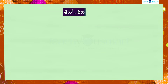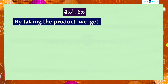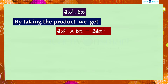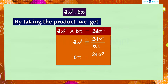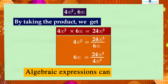4x² and 6x are two algebraic expressions. By taking the product of these two monomials we get 4x² multiplied by 6x equals 24x³. From this we can write 4x² as 24x³ divided by 6x, or 6x as 24x³ divided by 4x². Therefore we can say that algebraic expressions can be divided.